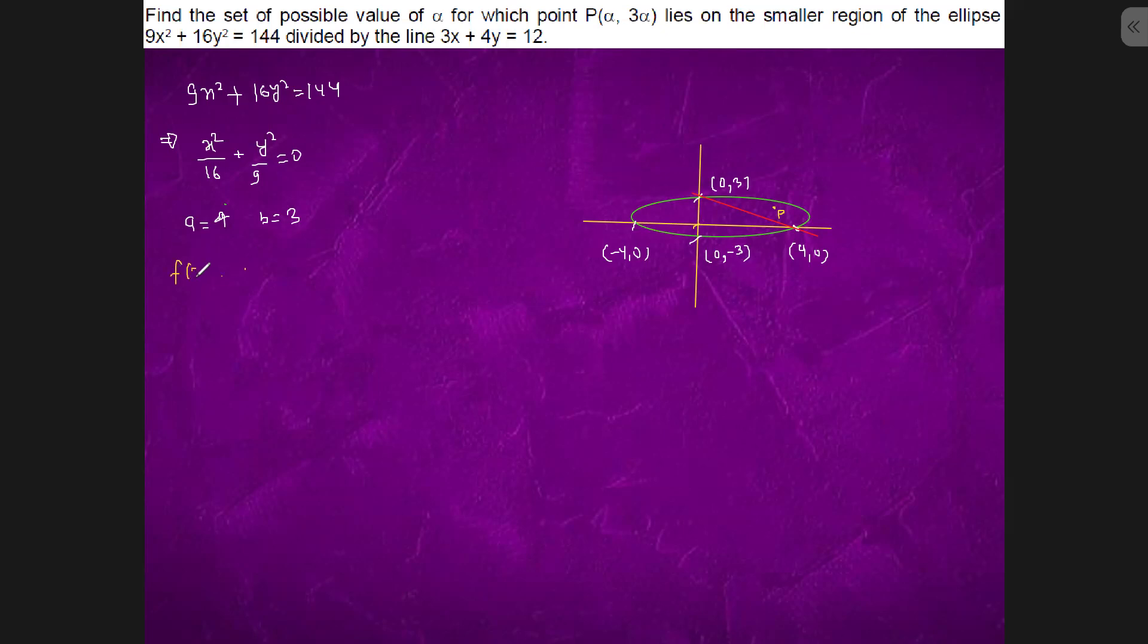Make a function f(x, y) and we will bring everything to one side. Now we will put (0, 0), the center, in this, which then is -1, which is less than 0.